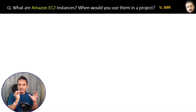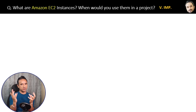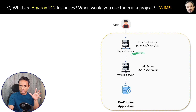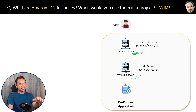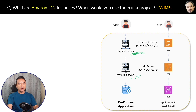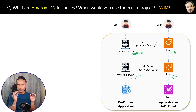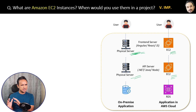What are Amazon EC2 instances and when would you use them in a project? To be very short and simple, EC2 are just like servers where you host your application. You have a front end hosted on one physical server and a back end or API server hosted on a separate physical server. Similarly, in AWS cloud, we call these servers EC2 instances.